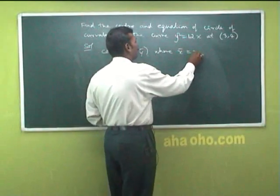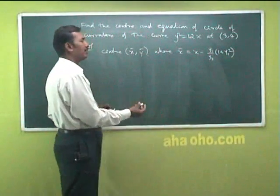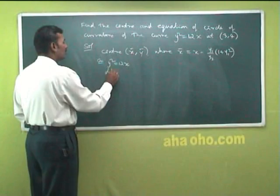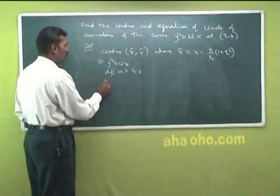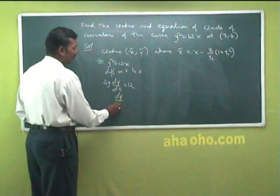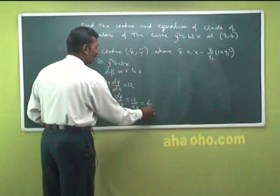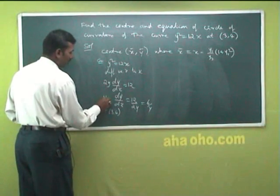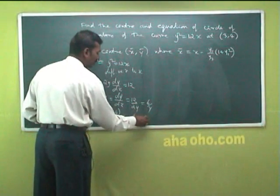To find x̄: x̄ = x − (y₁/y₂)(1 + y₁²). Here y₁ = dy/dx. Given y² = 12x, differentiate with respect to x: 2y(dy/dx) = 12, so dy/dx = 12/(2y) = 6/y. At the point (3, 4): y₁ = 6/4 = 3/2.